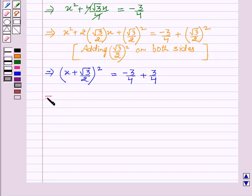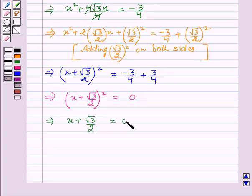This implies x plus root 3 by 2 whole square equal to 0. Now, on taking square root on both sides, we get x plus root 3 by 2 equal to 0.